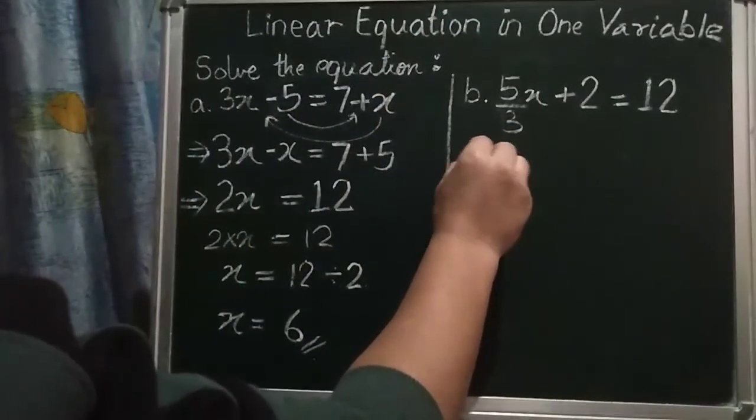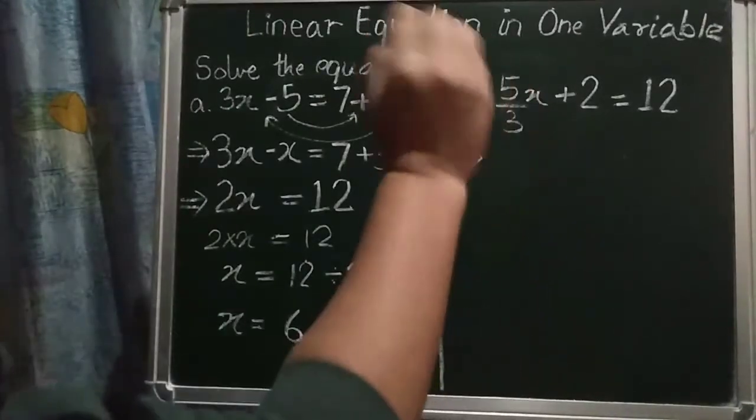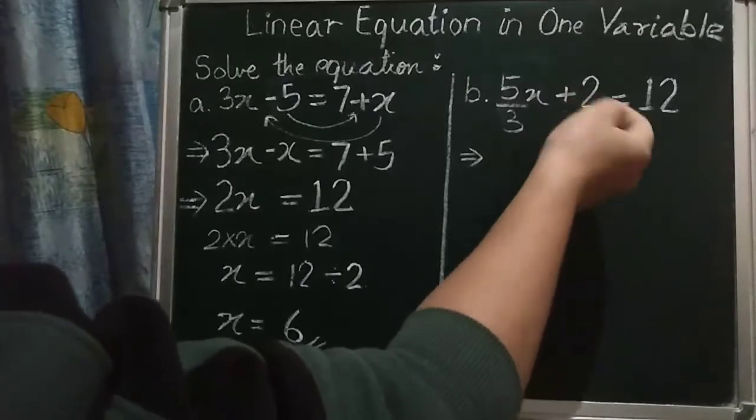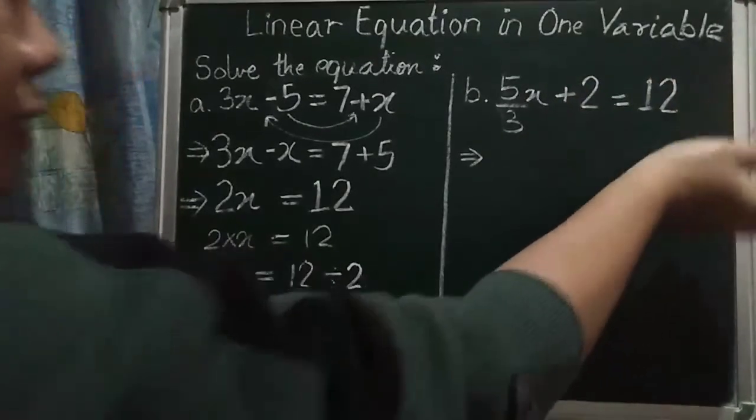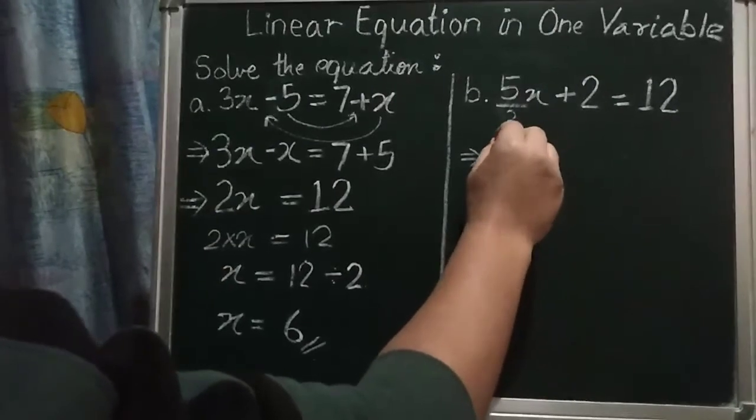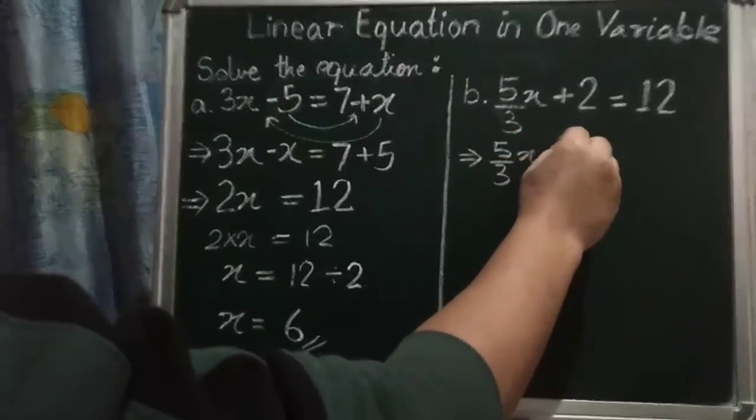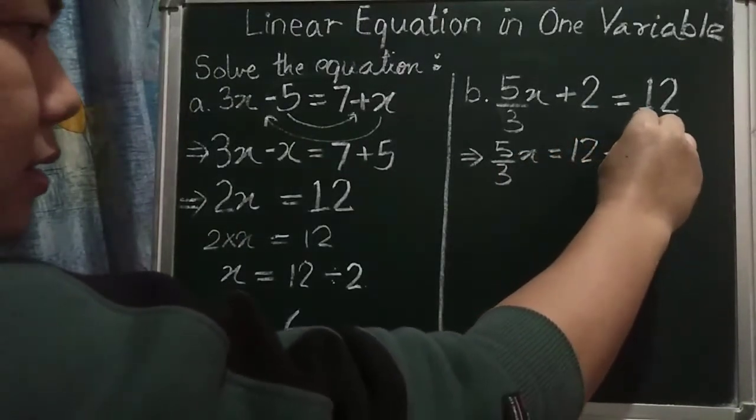Again, now in here, there is 5 by 3x. So first, what you have to do? You have to take this and bring it over here. So 5 by 3x is equal to 12 minus 2.